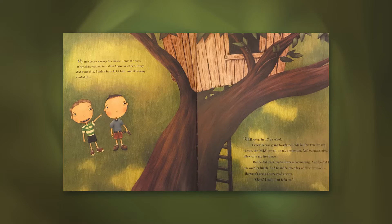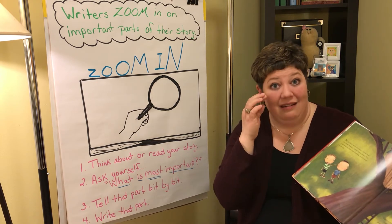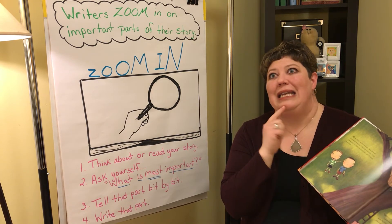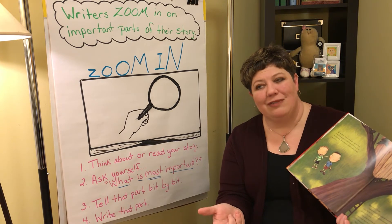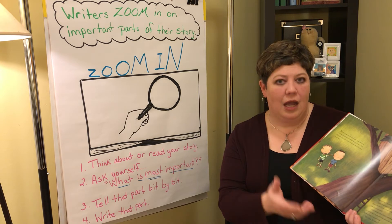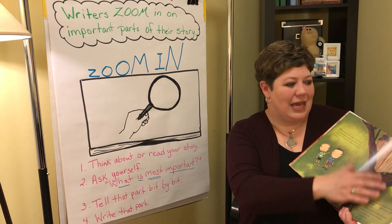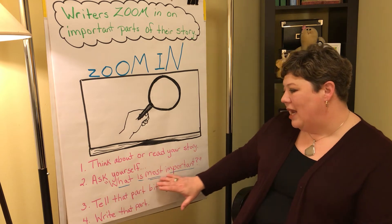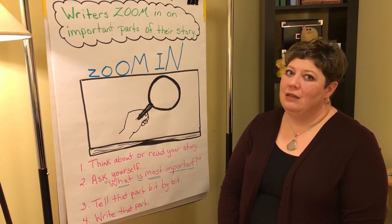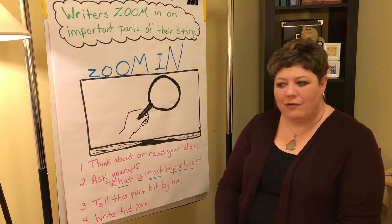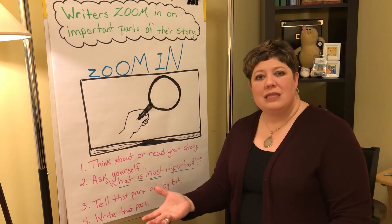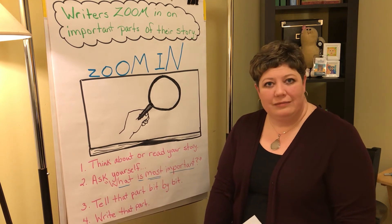'But he did teach me to throw a boomerang, and he did have me over for lunch, and he did let me play on his trampoline. He wasn't being a very good enemy. Okay, I said, but hold on.' That's a part where the author is zooming in on the boy's thinking — telling it bit by bit. The boy is thinking maybe he's not so bad, but he still has that list in his tree house. That was really important for us to know because it shows the boy is starting to change his mind about Jeremy Ross.